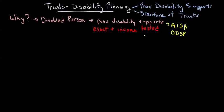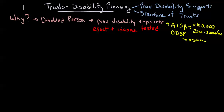AISH has fairly generous limits — you can have up to one hundred thousand dollars of assets, and you can make between about two and three thousand dollars a month depending on whether you're single or in a relationship, before you're completely cut off. With ODSP it's a little bit tougher: you can have no more than five thousand dollars in assets, and the income level is substantially lower — around a thousand to about fifteen hundred dollars a month depending on your circumstances. So it's very easy to lose your AISH benefit or your ODSP benefit.